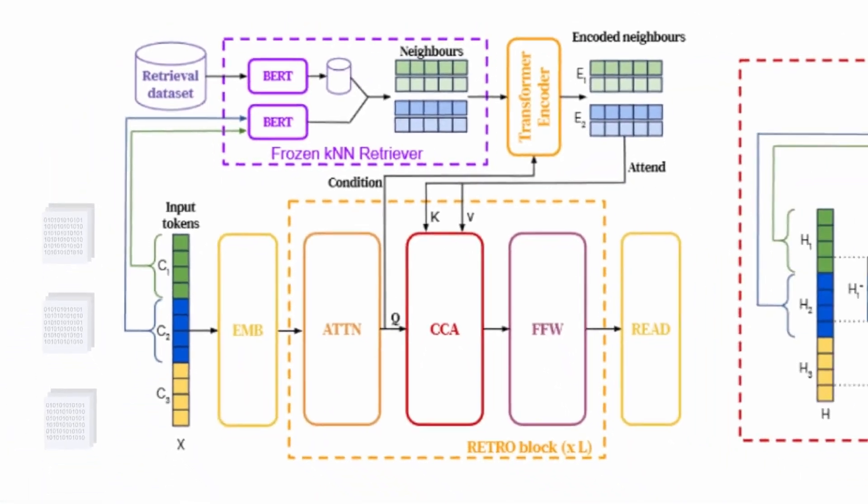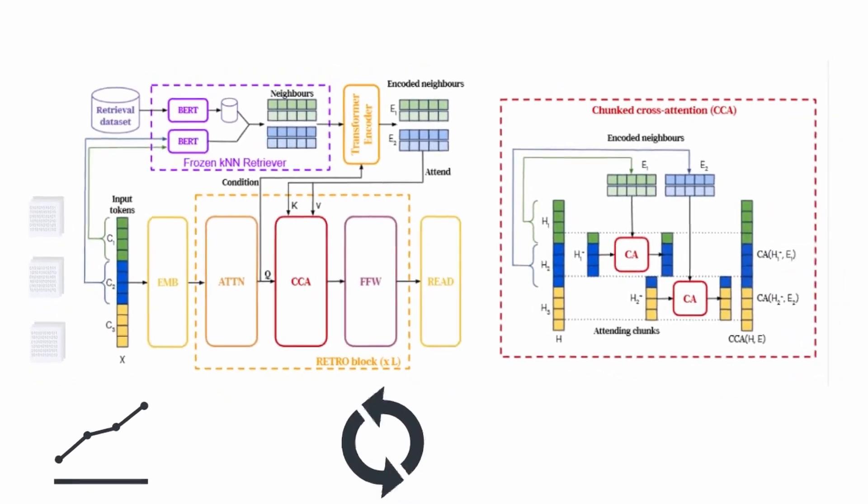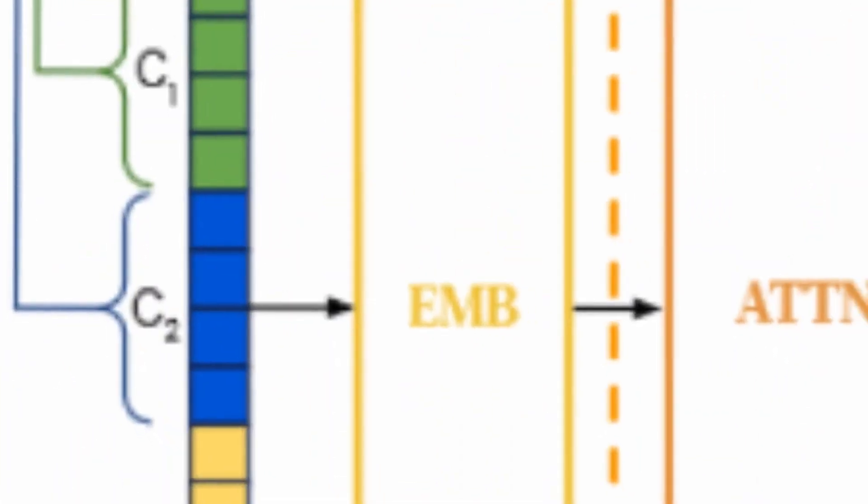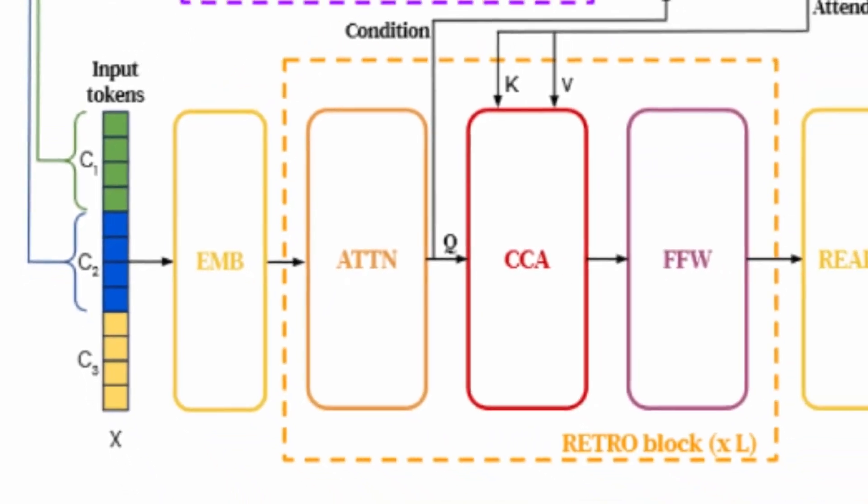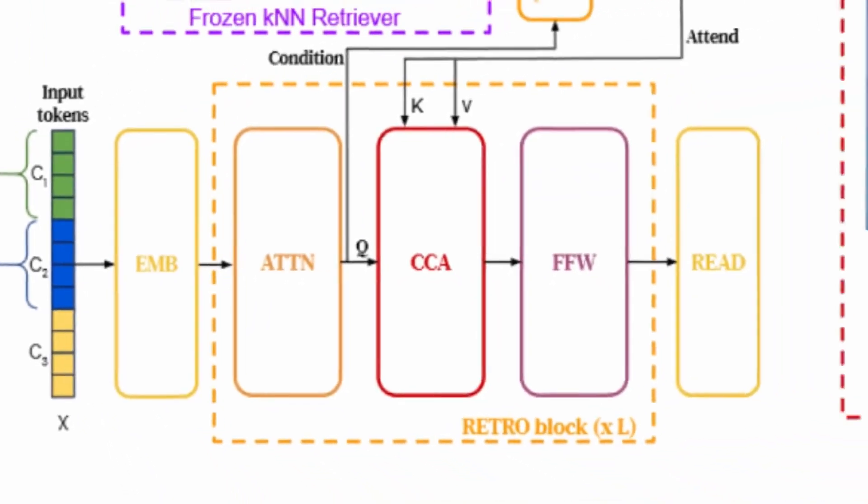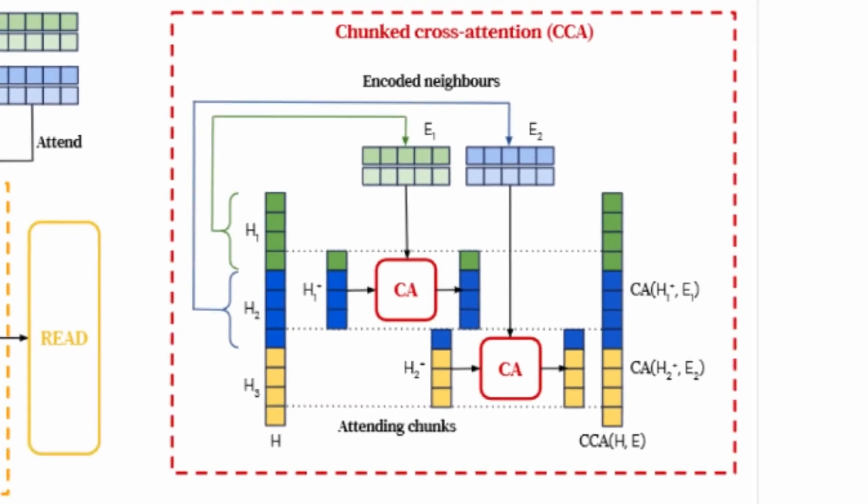The architecture, as depicted here, integrates this retrieval mechanism with a transformer model composed of an embedding layer, an attention mechanism, a chunked cross-attention component, and a feedforward layer within each retro block. The CCA is particularly crucial, allowing the model to attend to different segments of retrieved text in a manner that respects the sequential nature of language, thus enhancing the contextual awareness of the language model.